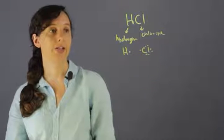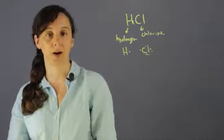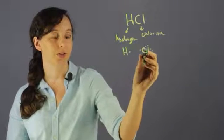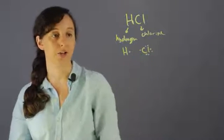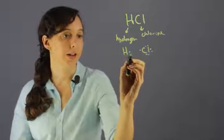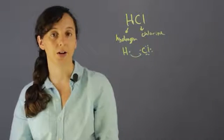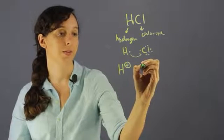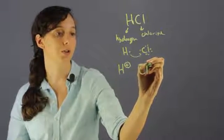So HCl forms an ionic bond because this hydrogen completely gives this chlorine its electron. And so this guy goes over there, and then what you get are two different ions. So you get positively charged hydrogen and negatively charged chlorine.